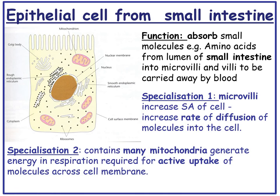Looking at an example of a cell adapted for a specific function: epithelial cells from the small intestine. Their function is to absorb small molecules like amino acids from the lumen of the small intestine into microvilli and villi to be carried away by the blood. Their first specialisation is microvilli, which increase the surface area of the cell and increase the rate of diffusion of molecules into the cell. The second specialisation is they contain many mitochondria, which generate energy via respiration required for active uptake of molecules across the cell membrane.